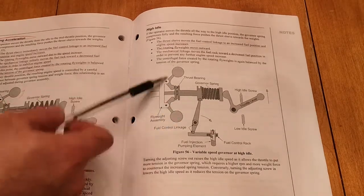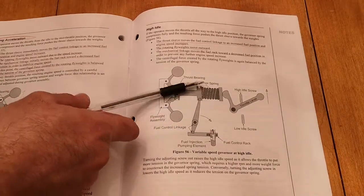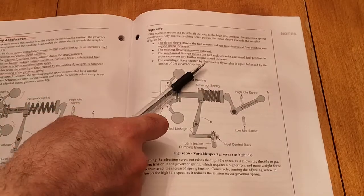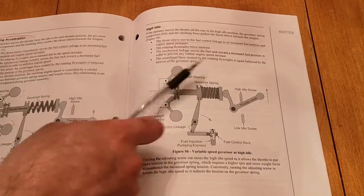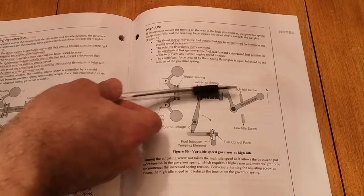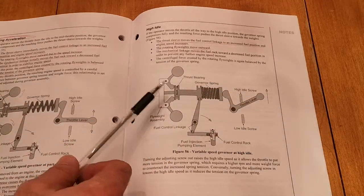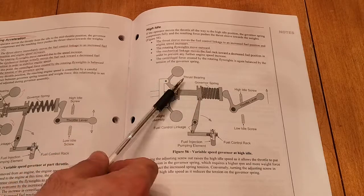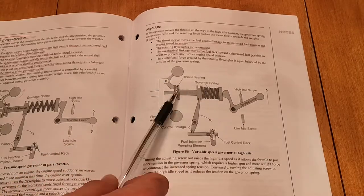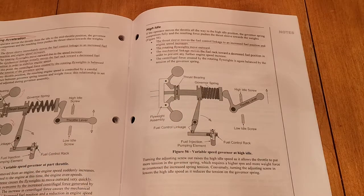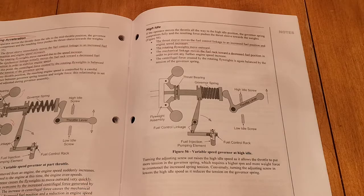Which will cause these weights to start spinning faster, and they will go out a bit more, creating more force against the governor spring. The weights will continue to force the spring back until they are exerting equal pressure on each other, in which the idle speed will stabilize.